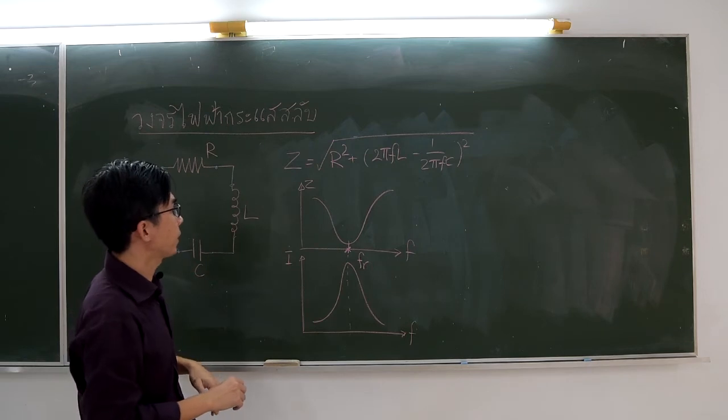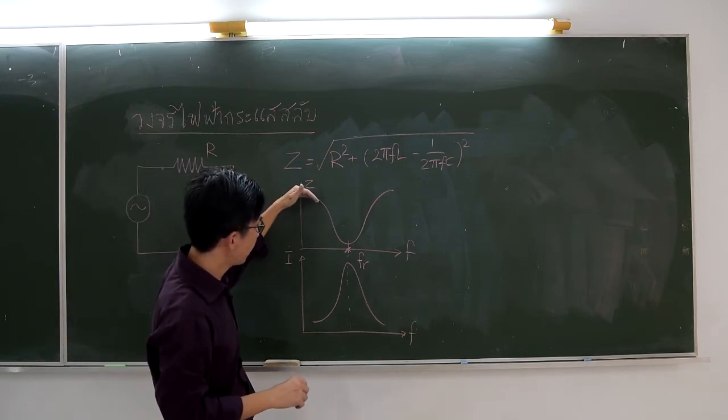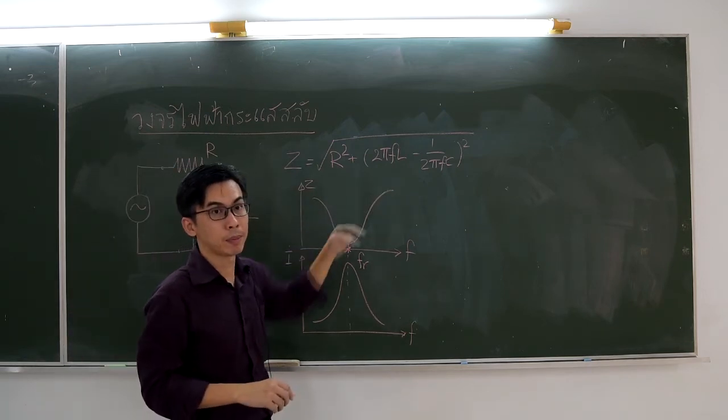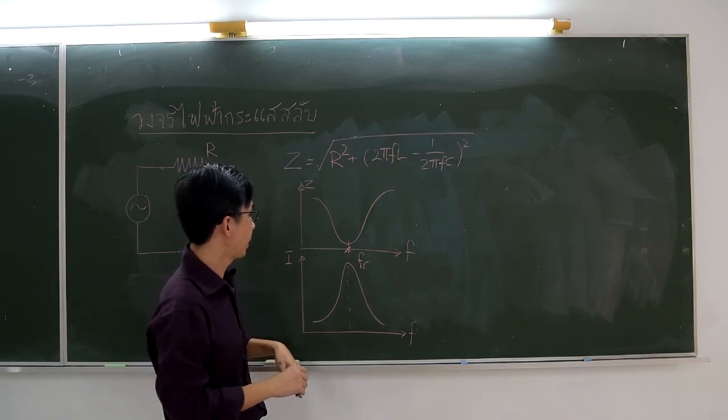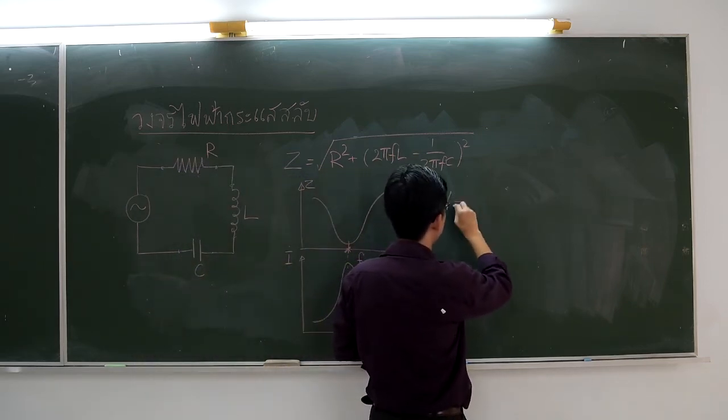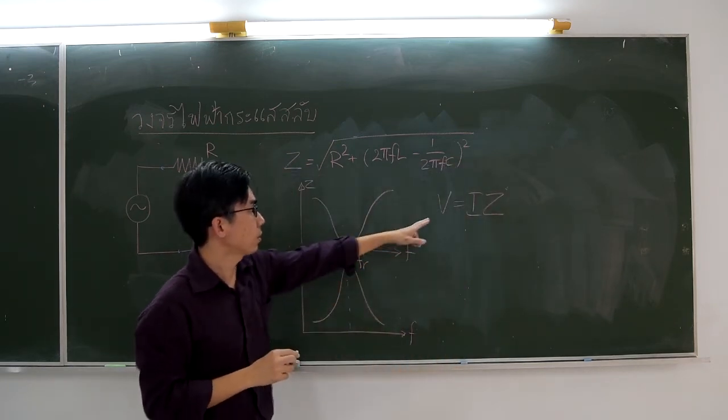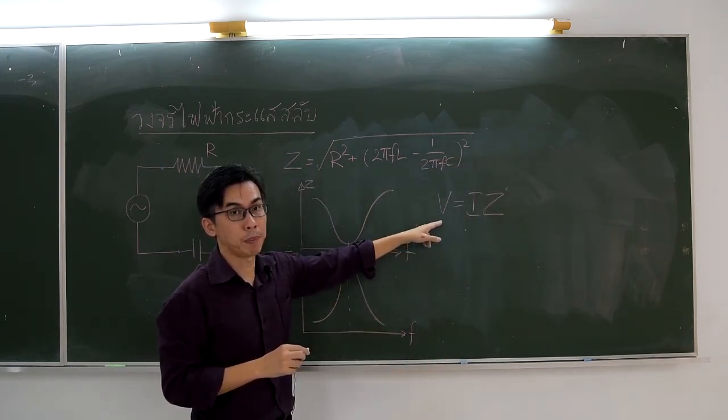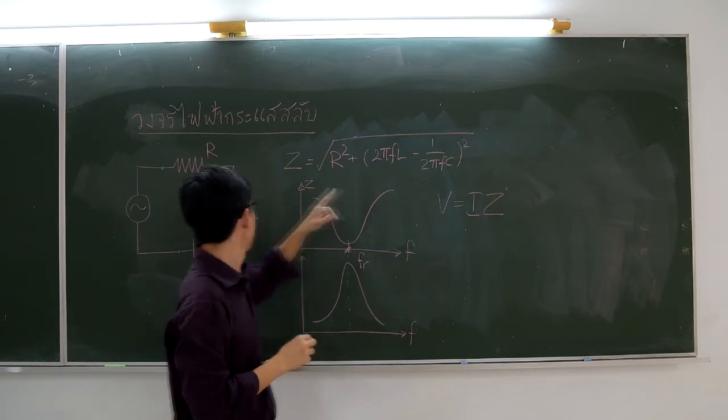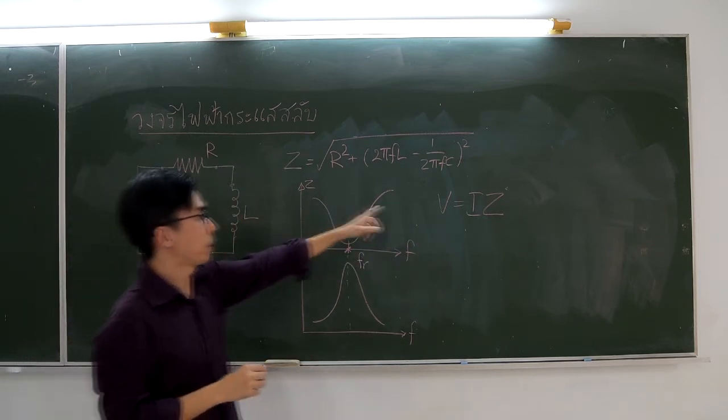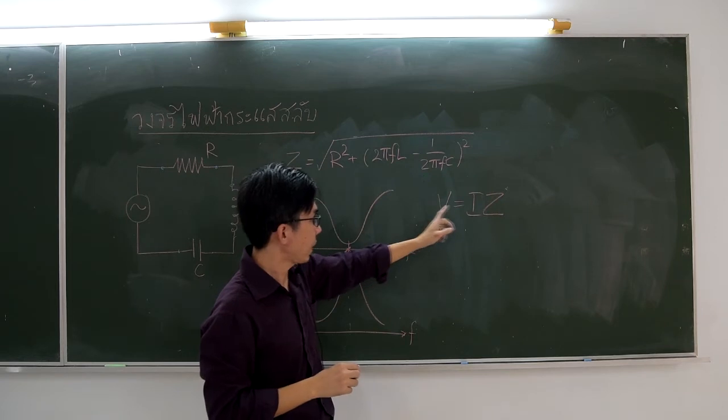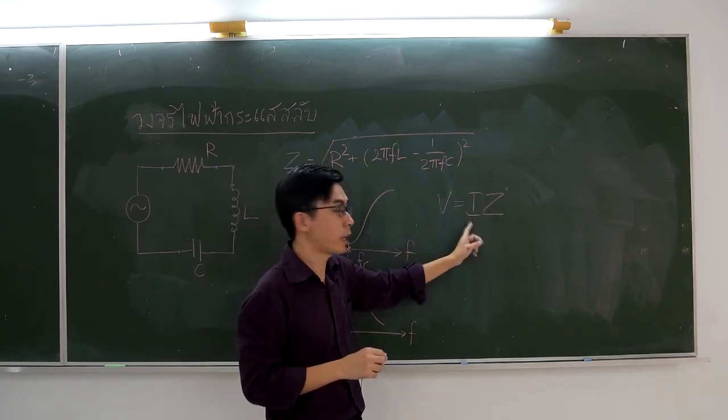Because the amplitude of the voltage is a constant, from Ohm's law, V equals IZ. We can conclude that when the impedance is a minimum, the current will become a maximum.